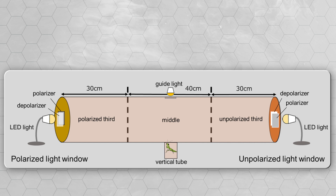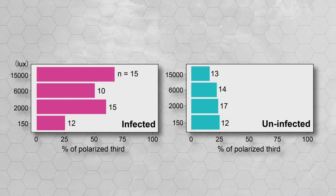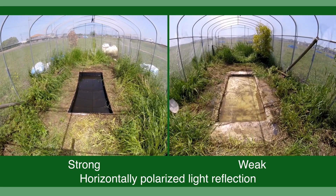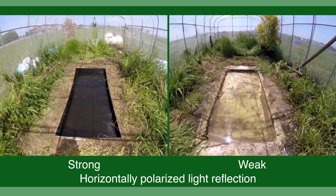This is a light choice box with two windows to give polarized and unpolarized light stimuli. This two-choice experiment was conducted to test for induced positive polarotaxis in the infected mantis at four light intensities. Infected mantis stayed close to the horizontally polarized side of the choice box more frequently than uninfected and dead mantis, especially at light intensities above 2,000 lux.